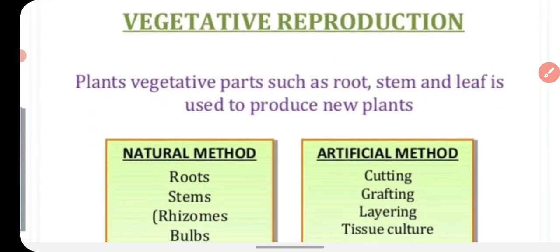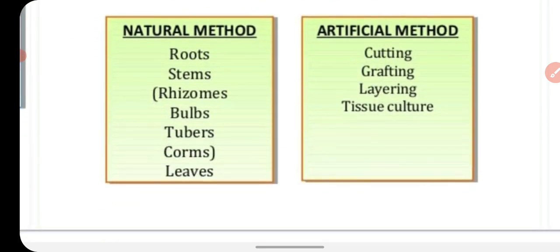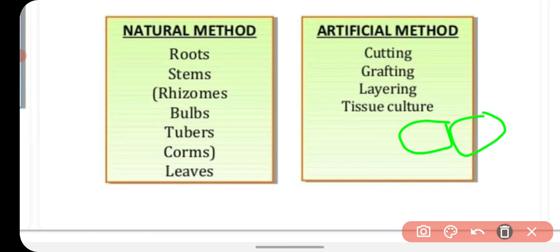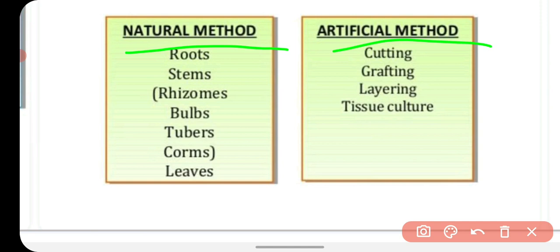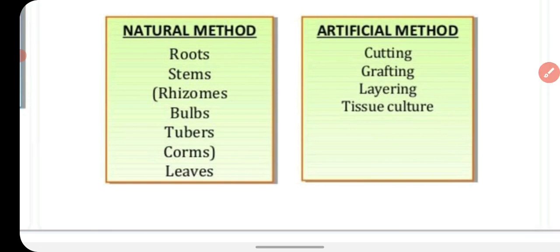Now we will talk about vegetative reproduction. When a plant's roots, stems, and leaves take part in the production of new plants, it is called vegetative reproduction. It is divided into two categories: the natural method, where plants naturally use roots, stems, and leaves to produce new plants, and the artificial method, which involves human involvement.